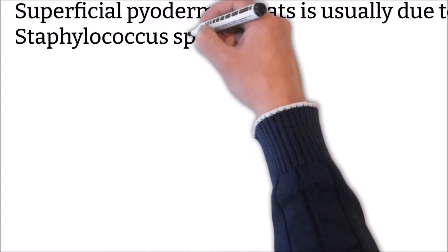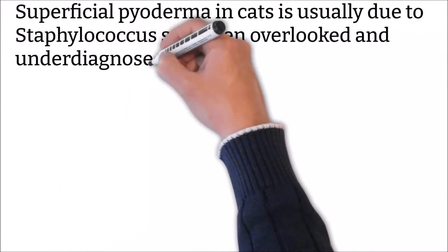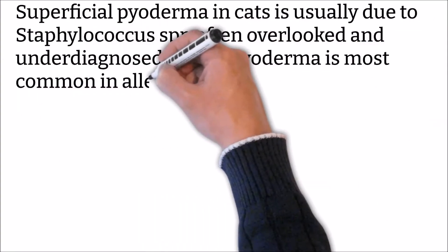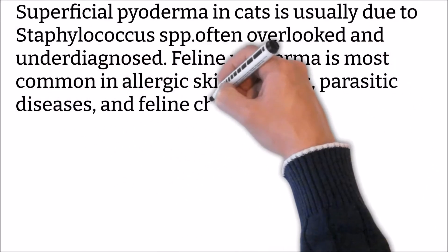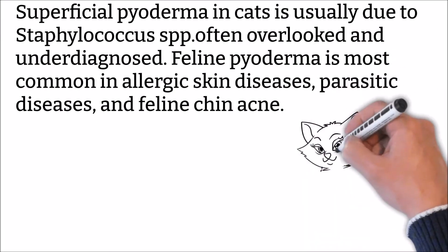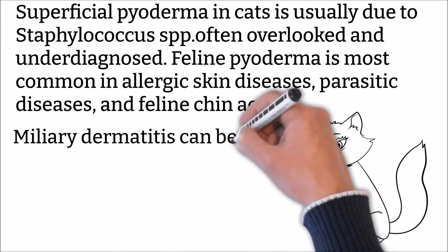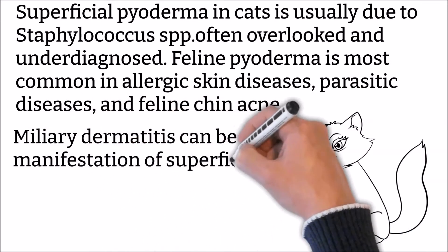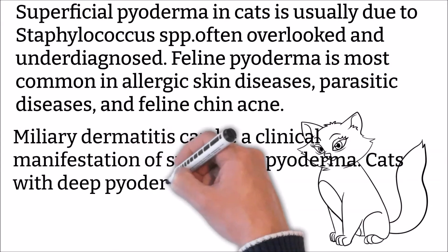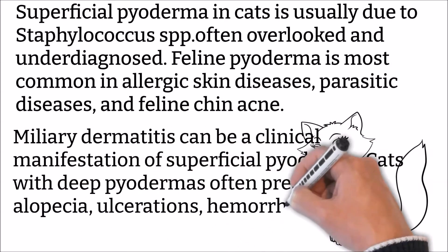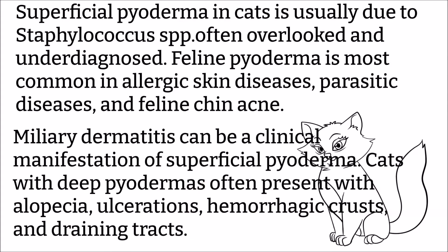Superficial pyoderma in cats is usually due to Staphylococcus species. It is often overlooked and underdiagnosed. Feline pyoderma is most common in allergic skin diseases, parasitic diseases, and feline chin acne. Miliary dermatitis can be a clinical manifestation of superficial pyoderma. Cats with deep pyoderma often present with alopecia, ulcerations, hemorrhagic crusts, and draining tracts. Recurrent non-healing deep pyoderma in cats can be associated with systemic disease such as feline immunodeficiency virus, feline leukemia virus, or atypical mycobacteria.